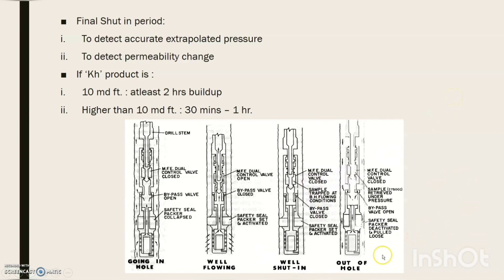The vital actions that need to be performed during the test are: while going in hole, the multi-flow evaluator should be closed, bypass valve should be opened, and packer is collapsed. In the well-flowing scenario, the MFE control valve is opened, bypass valve is closed, and the packer is set and activated. When the well needs to be shut-in, the MFE control valve is closed, a sample is trapped at bottom hole flowing conditions, bypass valve is closed, and the packer is still set and activated. While pulling out of hole, the packer is retrieved.